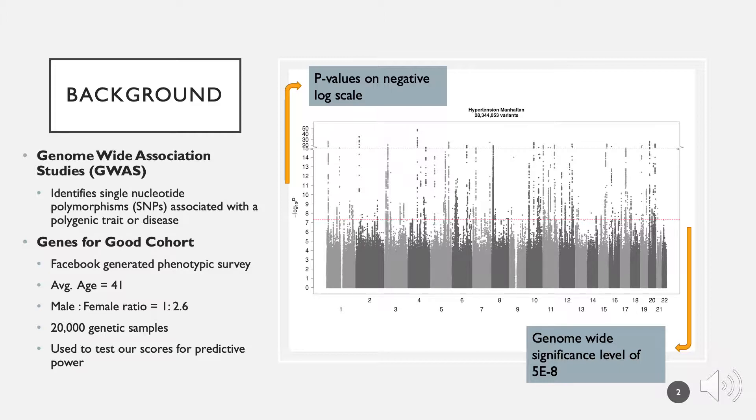To begin, there are a few background concepts that are needed to frame my research. Polygenic risk scores, or PRS, are generated through summary statistics from a Genome-Wide Association Study, or GWAS. A GWAS searches the entire genome for small variations known as single nucleotide polymorphisms, or SNPs.